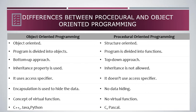Next is encapsulation. We use encapsulation in object-oriented programming but not in procedural. Encapsulation means binding data and functions together — for example, in C++ classes we keep data and functions together so that outside code cannot access them. Object-oriented programming also uses virtual functions, which is a very good concept we will discuss later. Object-oriented programming is used in C++, Java, and Python, whereas procedural-oriented programming is used in C.